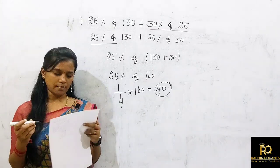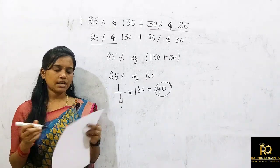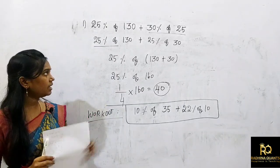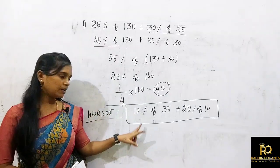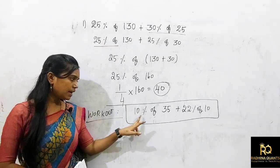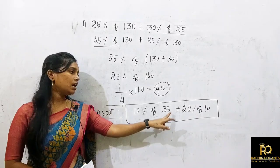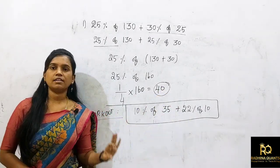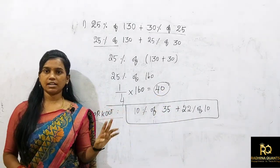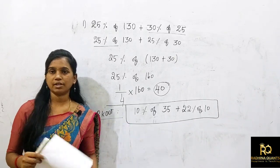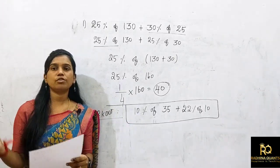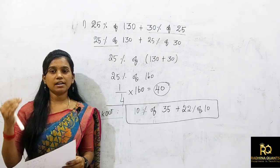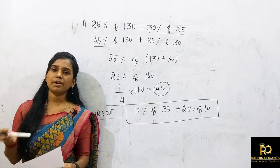So that gives us 40. Next question — if you have a workout sum, you can solve it: 10% of 35 plus 22% of 10. If you use this interchange technique, you can answer it. Leave your answer in the comments — if you have a clear explanation, you can pin it.